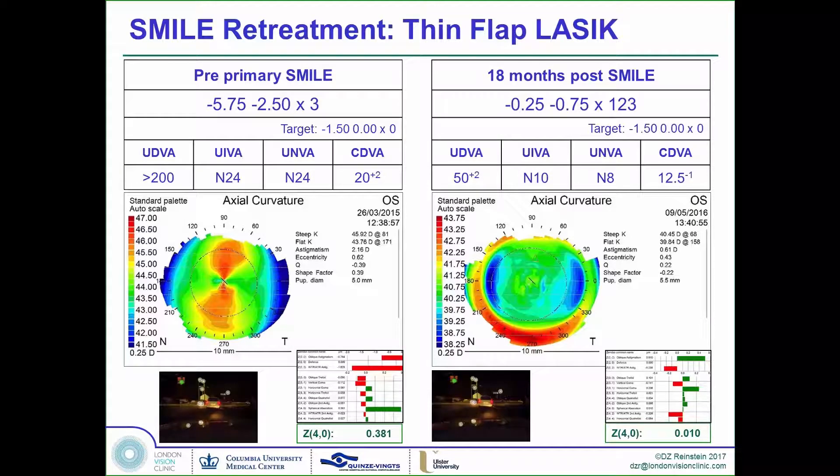Let's go through some examples. Here is a high myopic astigmatic eye, which was targeted for mono-vision to minus 150, but ended up slightly over-corrected.